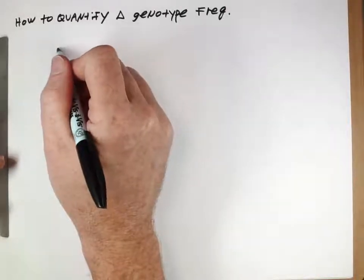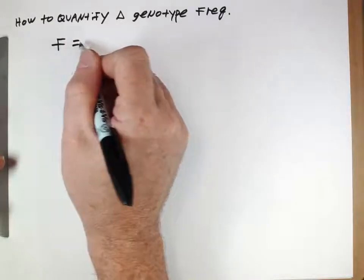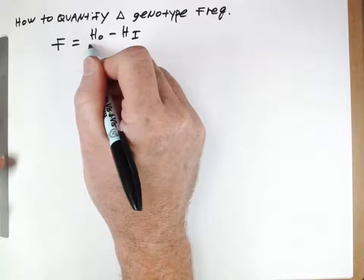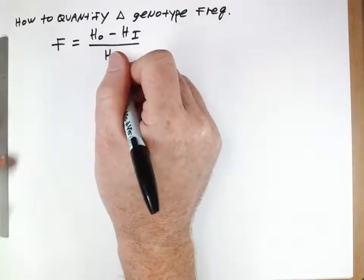The way we're going to quantify this is with a value F, and F is going to be defined as this value here where...